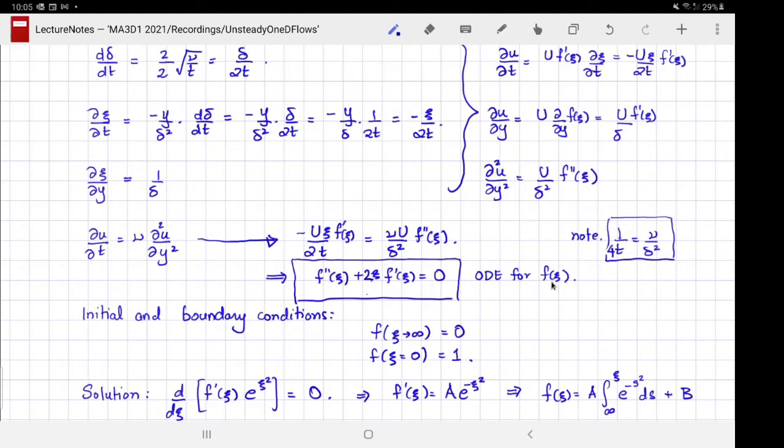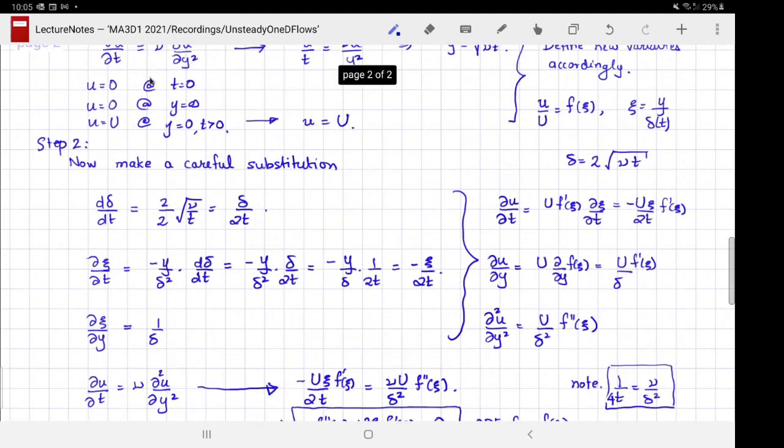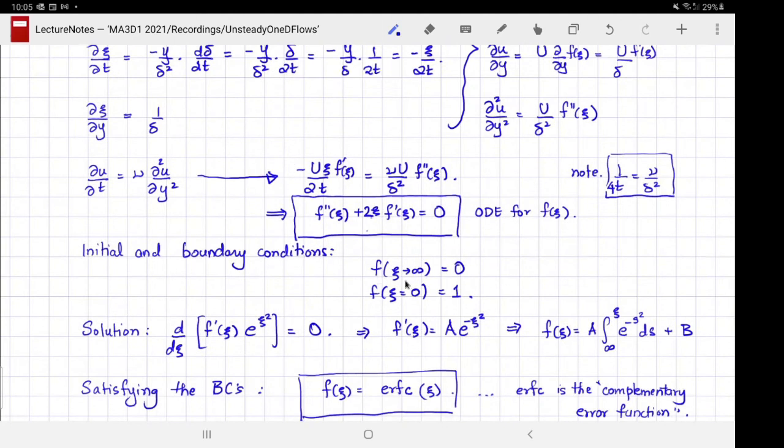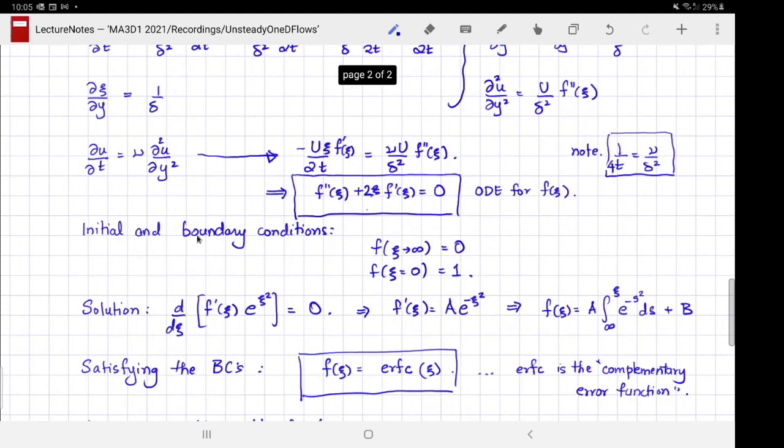Now if we take the boundary conditions and substitute our self-similar ansatz into the boundary condition, we get f(ξ) going to infinity is zero, f(ξ) equals zero is one. This equation is particularly convenient to solve using integrating factors. The integrating factor is e^(ξ²).